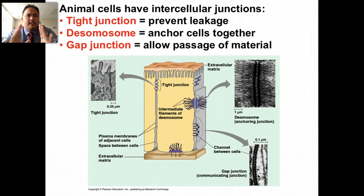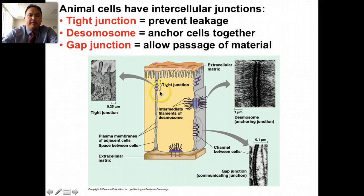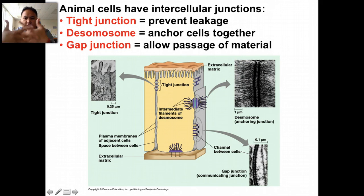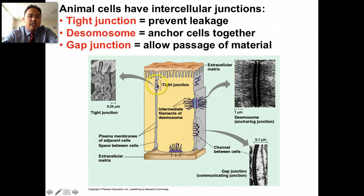Then we talked about intercellular junctions — what connects cells to each other. There are tight junctions, which prevent the cell from leaking. There is a desmosome, which acts like an anchor — things literally stick into the other cell so they're anchored to one another. And then there is a gap junction, which is like pipes that allow things to pass between cells.